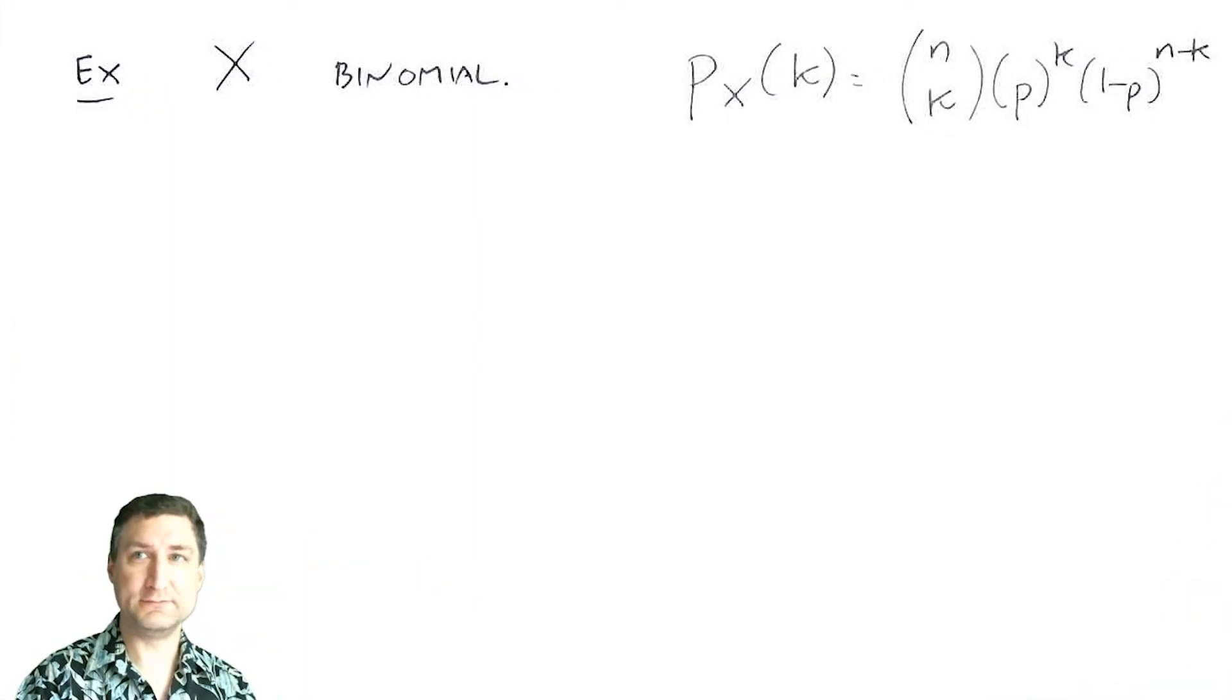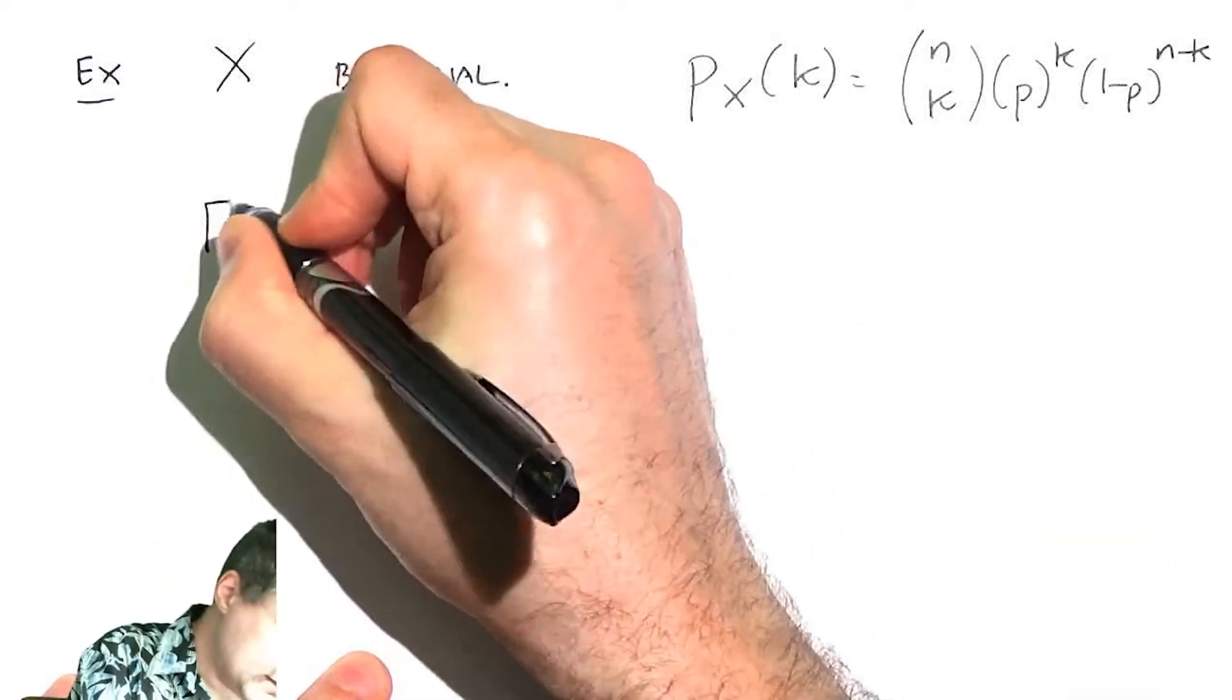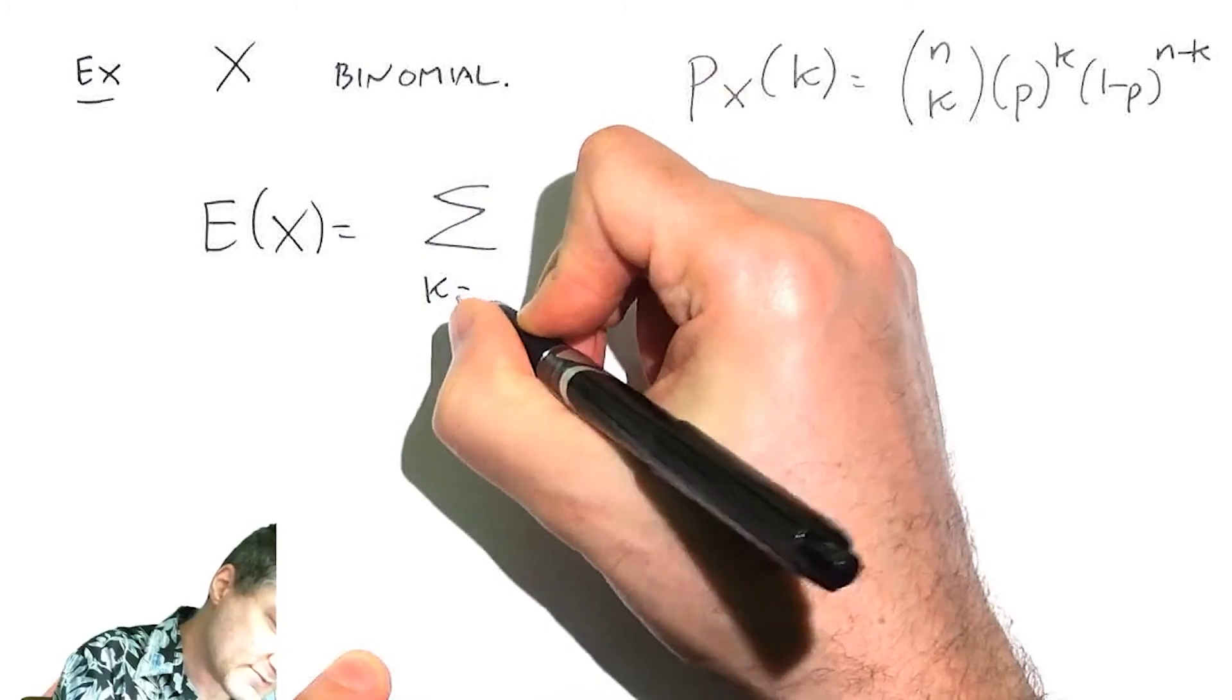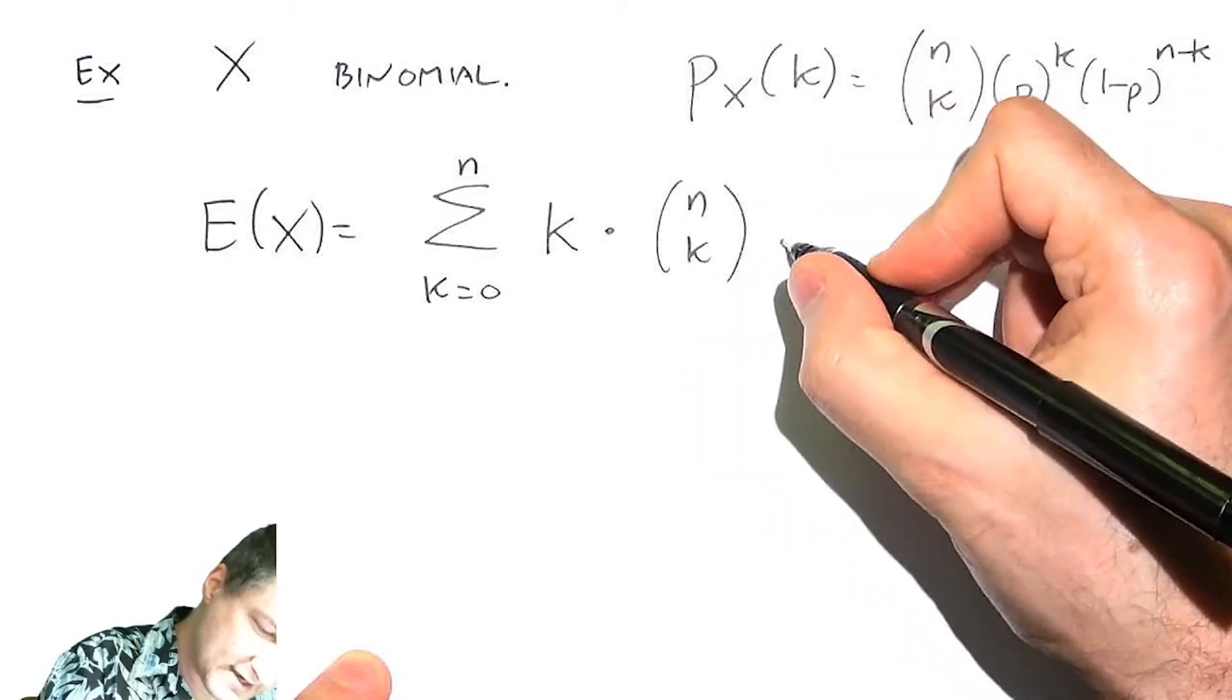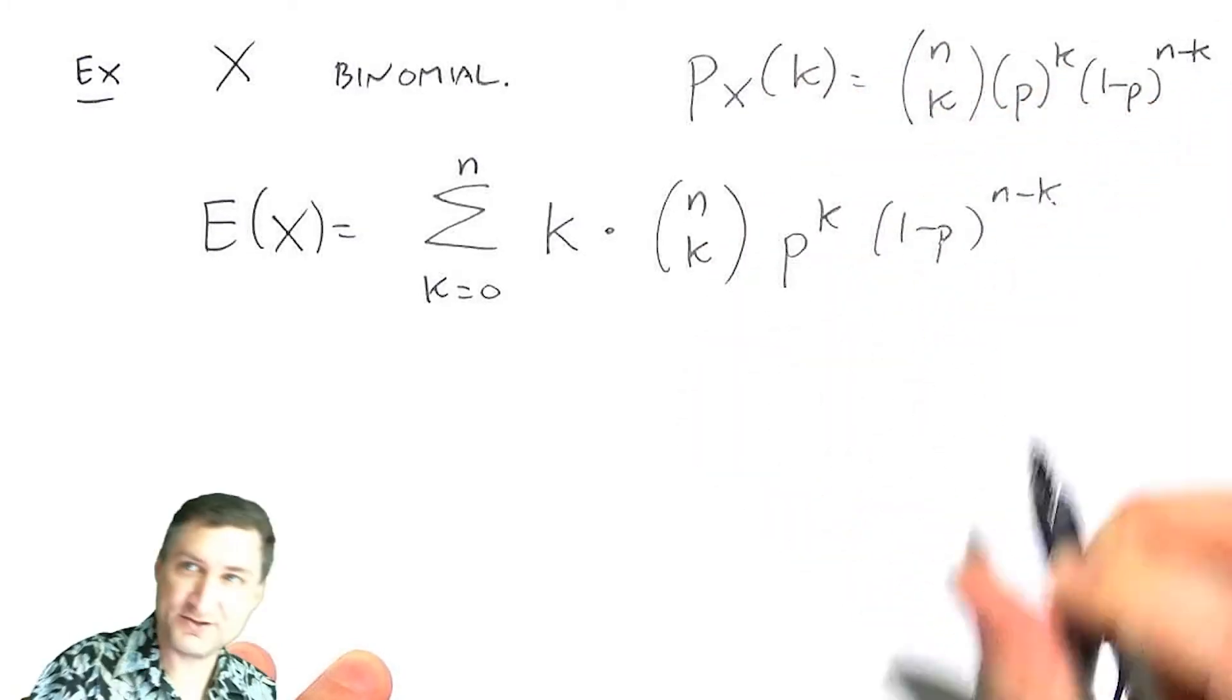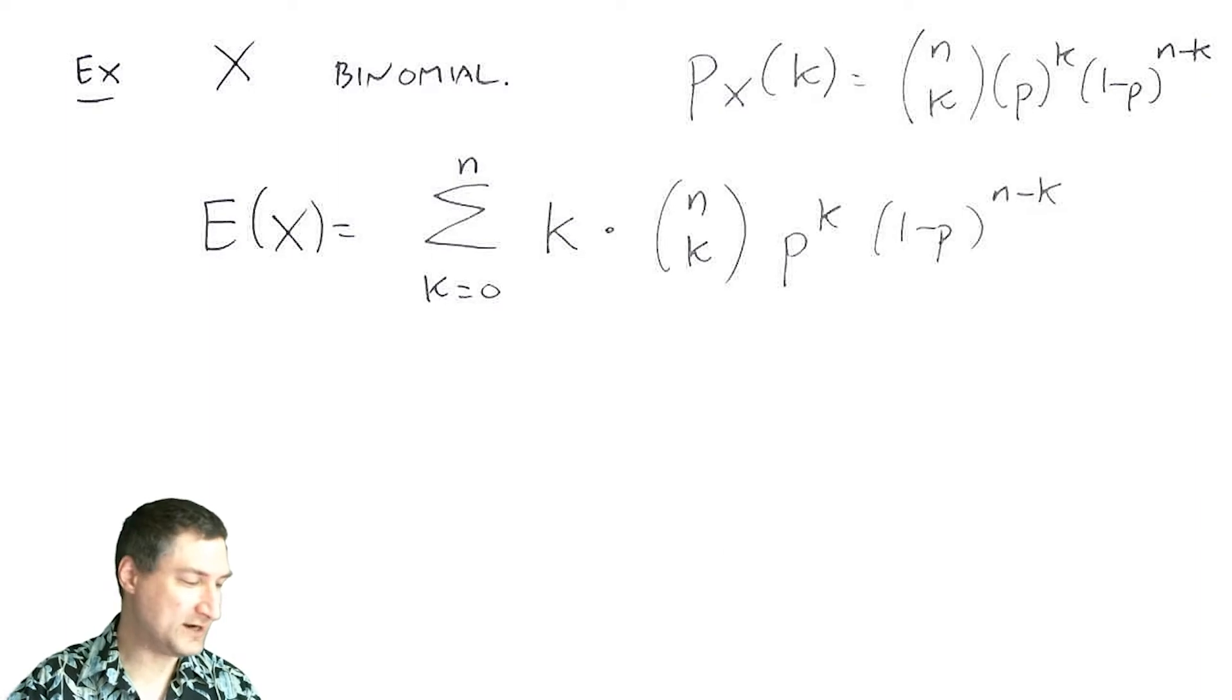Now computing the expected value of this by the formula would be a headache. That would say, okay, well, I have the possible outcomes 0 to n, k times n choose k times p to the k times 1 minus p to the n minus k. I mean, there's no simplification in the world that is going to make this easy. I mean, it's possible to do, but it's a huge pain.